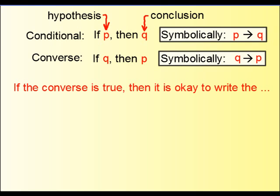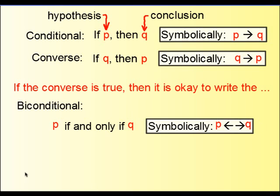Now if the converse is true, then it's okay to write what is called the biconditional. The biconditional simply states that we can go either way. To separate the two, the hypothesis and the conclusion, we use the phrase if and only if.